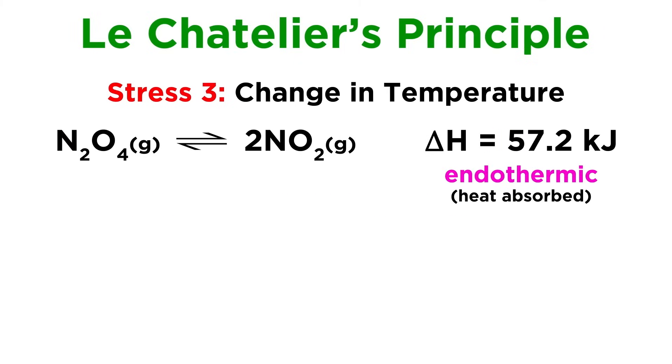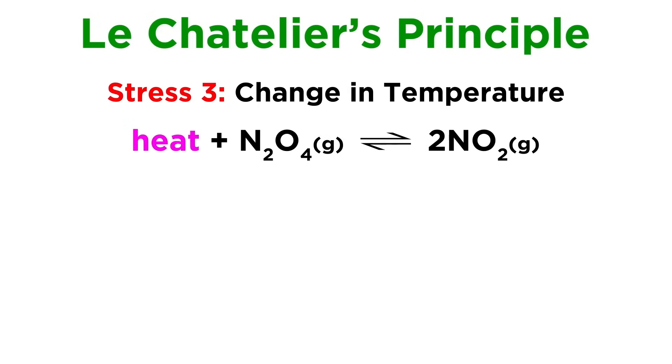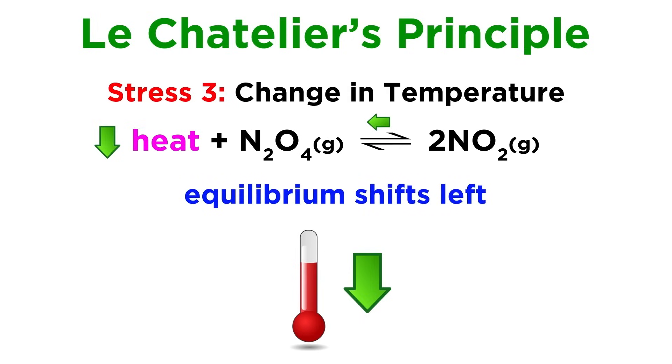Looking at one more example, the change in enthalpy for the forward reaction is positive, which makes it endothermic, which means heat can be treated as a reactant, since heat must be absorbed for the reaction to occur. If we cool down the system, which way will the equilibrium shift? It must shift left to regain some of the heat lost.